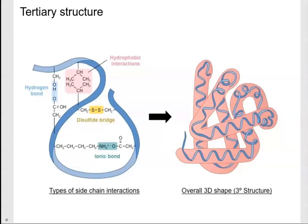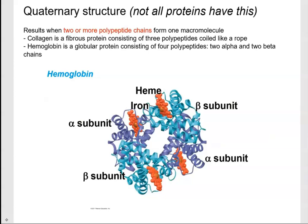Here's another look at the different types of bonds in tertiary structure: hydrogen bonds between oxygen and hydrogen, hydrophobic interactions where groups cluster away from aqueous solution, covalent disulfide bonds that cause the ribbon to fold by pulling regions together, and ionic bonds between the positive and negative charges of R groups of different amino acids.